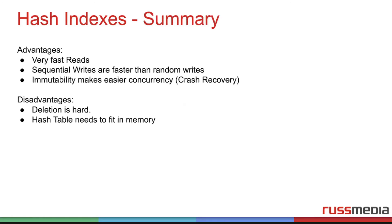Now for a quick summary of these hash indexes: they have very fast reads because we only need to go into memory, look in the hash map, look at the value, and read the data. Sequential writes are faster than random writes — adding to a file is way faster than picking a point somewhere in the file and updating it. It's way faster.